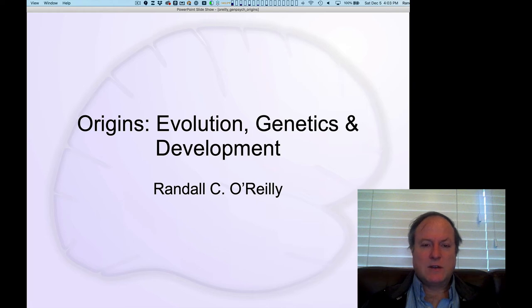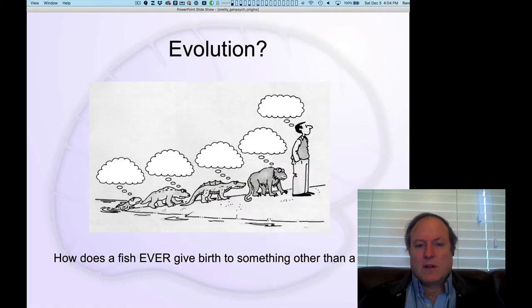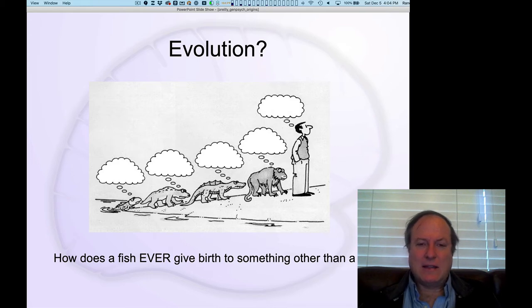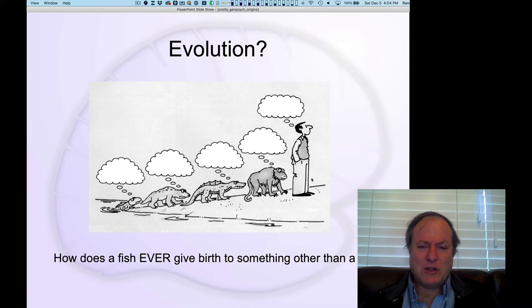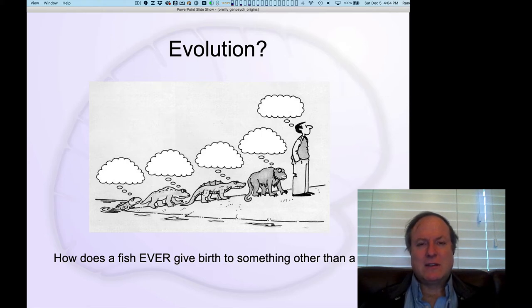The next chapter is Origins — the mysterious basis of where all this stuff comes from. We're going to start thinking about evolution, the ultimate origin of all life on Earth. The central puzzle here is just how does anything ever change from one form to another?